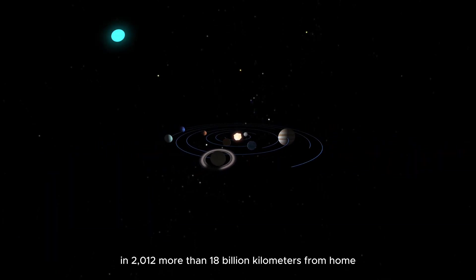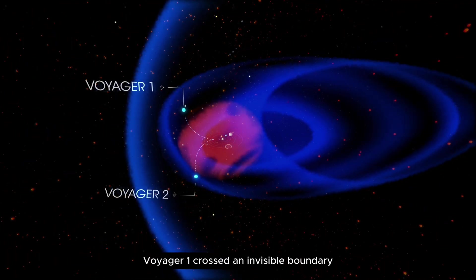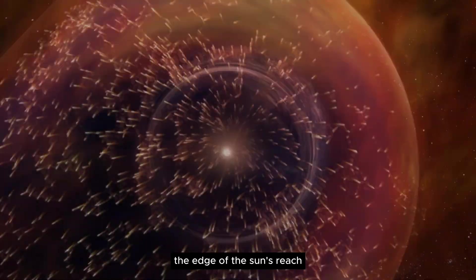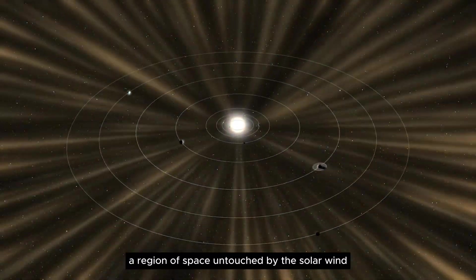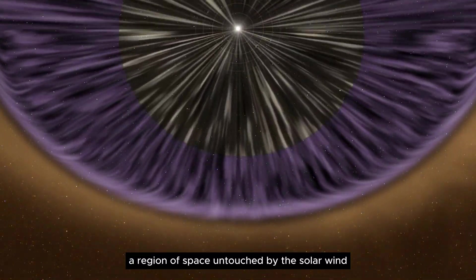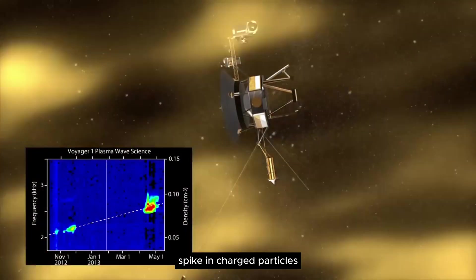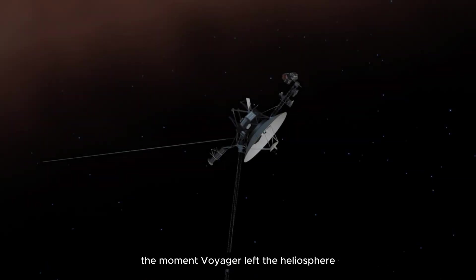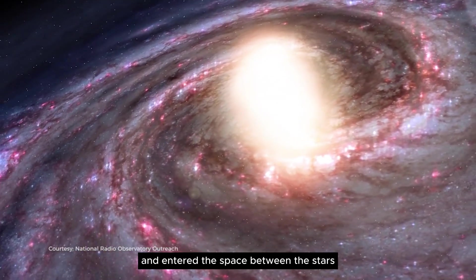In 2012, more than 18 billion kilometers from home, Voyager 1 crossed an invisible boundary, the edge of the sun's reach. Beyond that point lies the interstellar medium, a region of space untouched by the solar wind. As the probe moved through it, its instruments detected a sudden spike in charged particles. The moment Voyager left the heliosphere and entered the space between the stars.